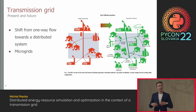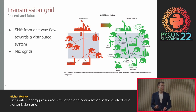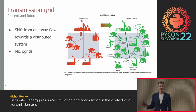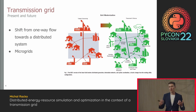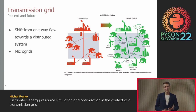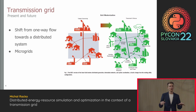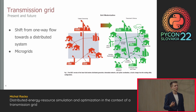Traditionally the grid was meant to support one-way flow of energy from power plant to end customer. But as people gradually add more distributed devices — photovoltaic panels, energy storage, electric vehicle chargers — the grid is becoming more distributed, more like multiple microgrids connected together, where energy flow can be much more back and forth than we were used to.